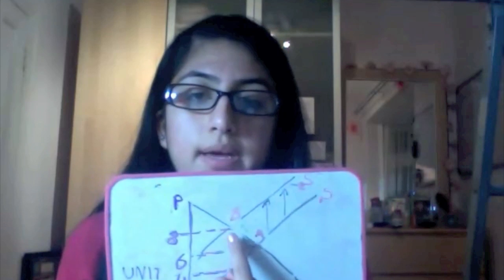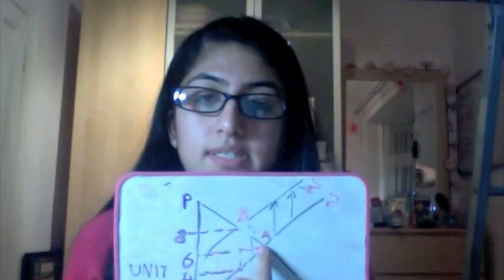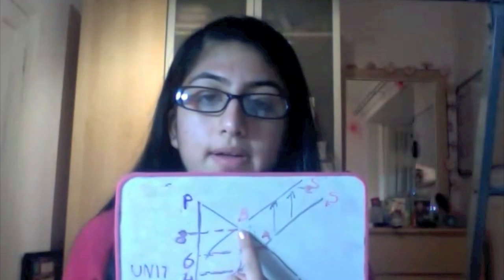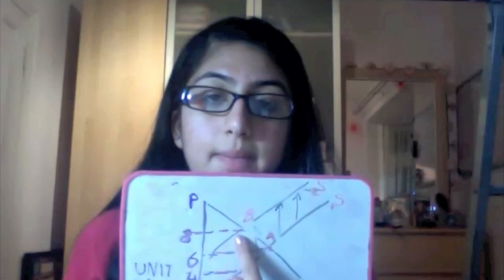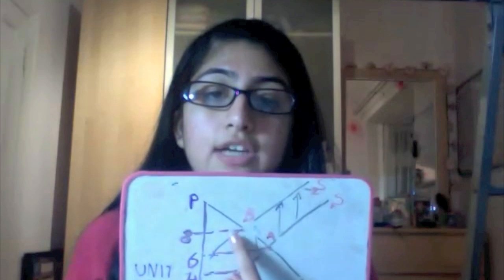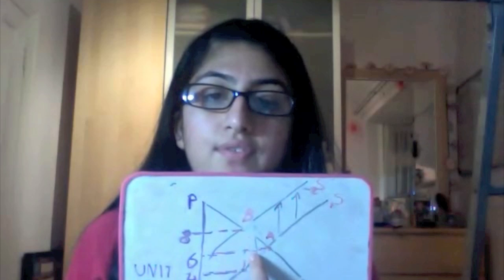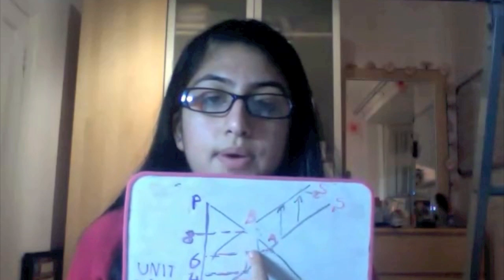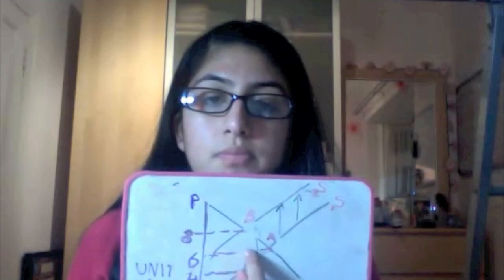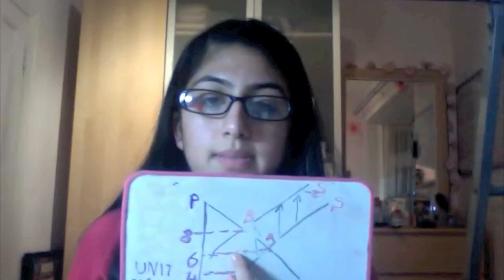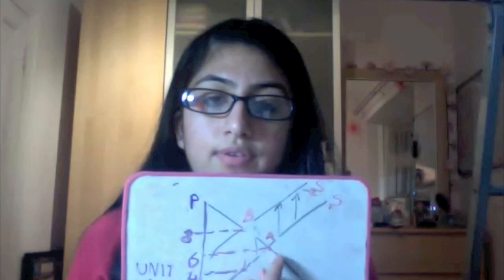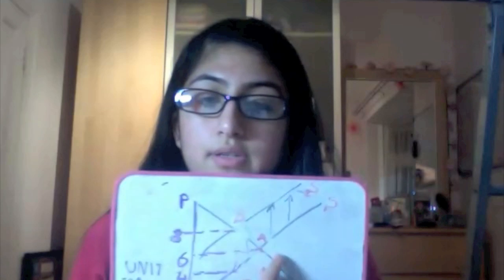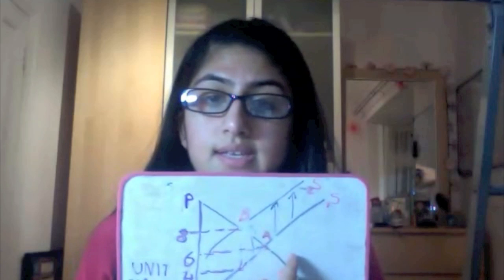The consumer is only seeing the price change from £6 to £8. They are only experiencing a £2 difference. Therefore, the consumer will be paying £2 extra times by the quantity, which is £100, which is £200. The consumer is supplying half of the government revenue. It is giving £200 of the £400 the government is getting.